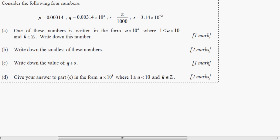It says consider the following numbers: P equals 0.00314, Q equals 0.00314 times 10 to the second power, R equals pi divided by 1000, and S equals 3.14 times 10 to the negative 2 power. Okay, so obviously these numbers, they're fairly close, well, they're not that close together, but they look fairly close together because they all use 3.14. Typical IB trick here. One of these numbers is written in the form of A times 10 to the K, where A is greater than or equal to 1 or less than 10, and K is an element of integers. That just means it's in scientific notation.